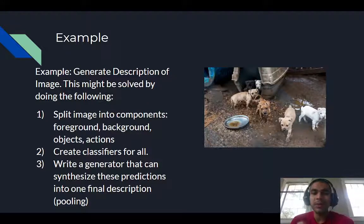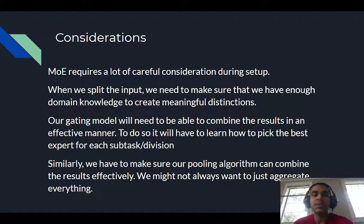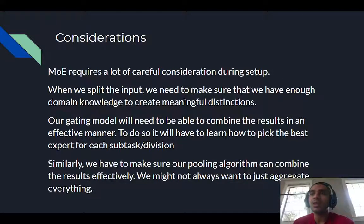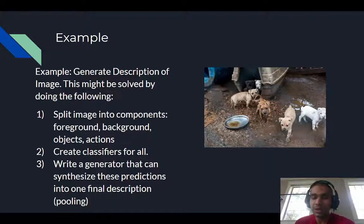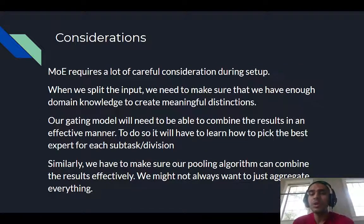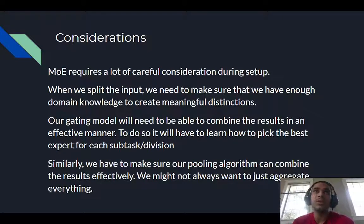You can see how, by building on input from every individual smaller model, we're able to create a bigger, more capable overall model. This kind of approach comes with a lot of considerations — MoE requires significant domain knowledge because you want to set up your tasks in a way that's actually meaningful. You can't just randomly split an image into four quadrants; that wouldn't make sense — you'd end up with half a dog and confused networks. Splitting input data into meaningful sub-categories and featurizing it requires substantial domain expertise.